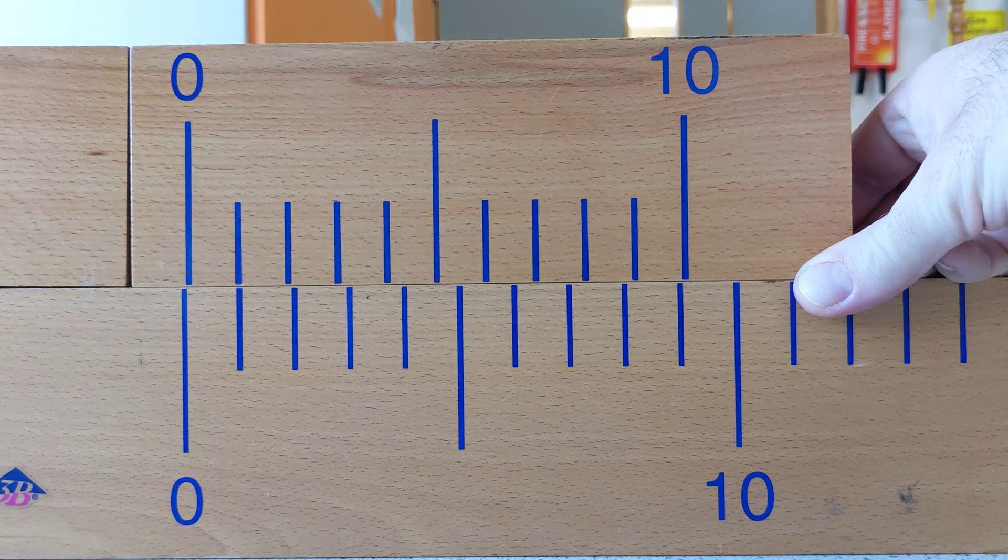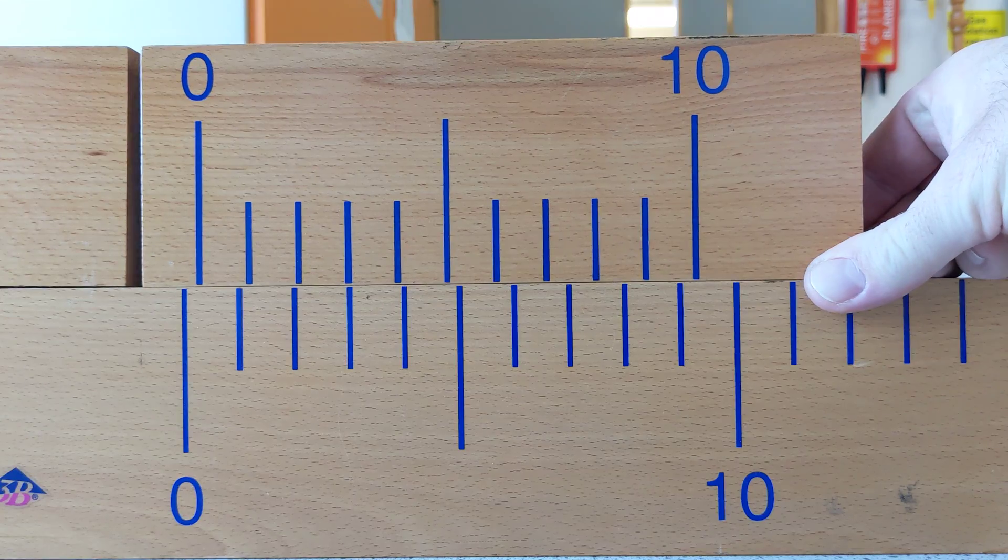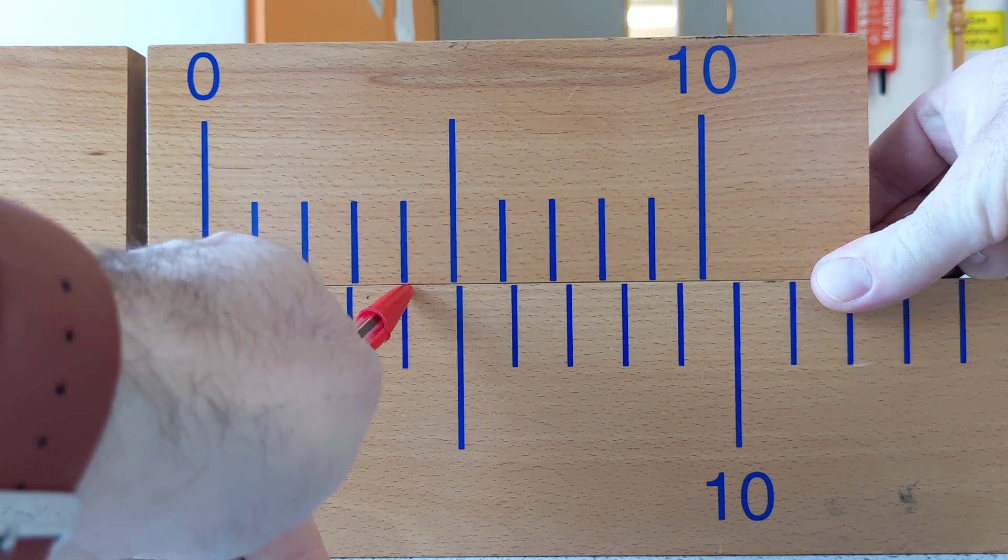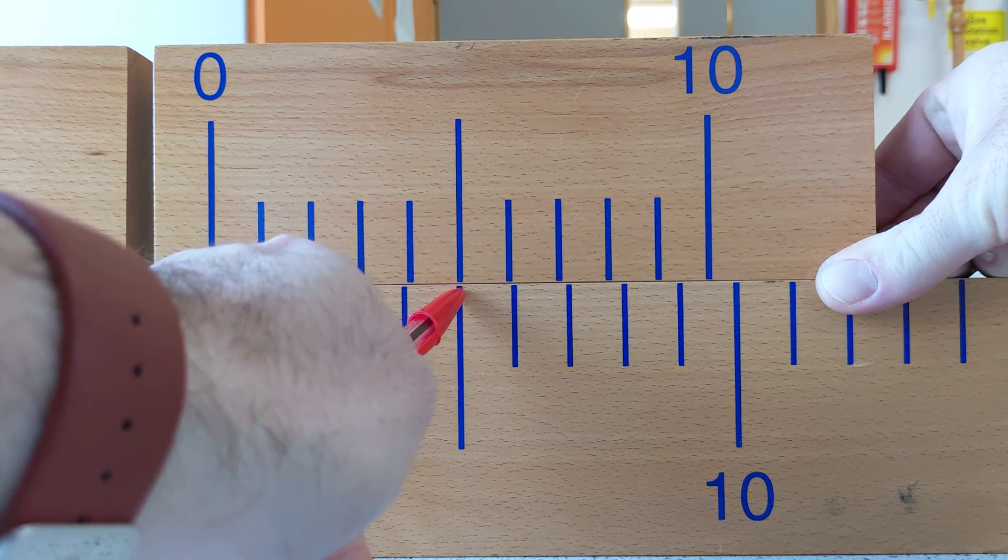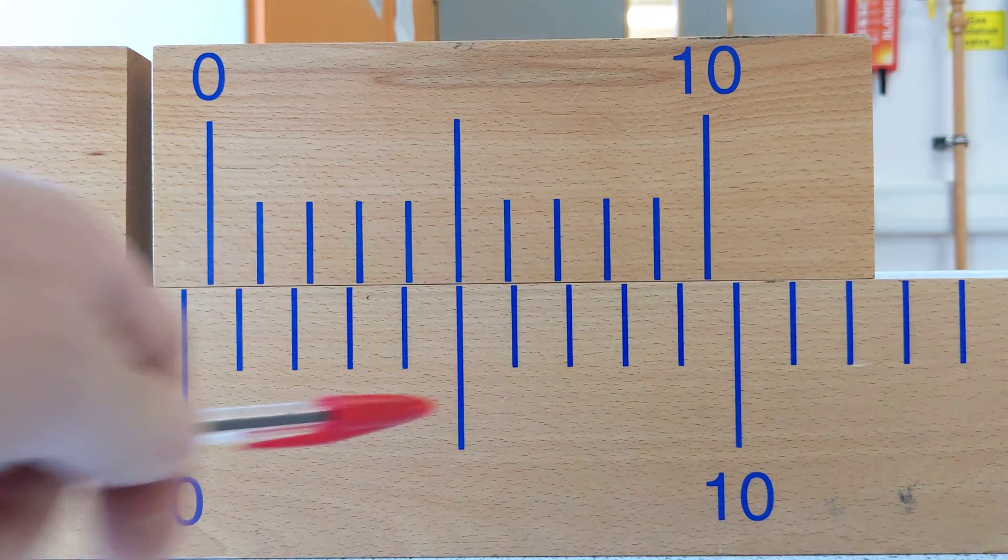If I were to move it two tenths of the way along, this one lines up. Three tenths, four tenths, five tenths of the way along. In other words, half of the way along. These line up.